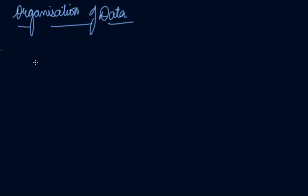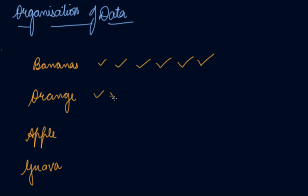Organization of data. Now what is the organization of data? Let's say you have banana, orange, apple, and guava in your fruit baskets. And then you count the bananas, you keep on ticking with one banana, ticking with one banana you count. Then you count the oranges and you tick. Then you count the apple, every apple you count you put a tick to it.